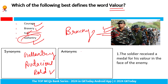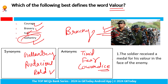Theek hai, jabki antonym kya ho gaya — timid, dar ko, fear, cowardice — ye saare iske antonym hain. The soldier received the medal for his weller in the face of the enemy. Face of the enemy ki time par soldiers ko — shatruta ka saamna karna — aur uske liye medal for his weller.